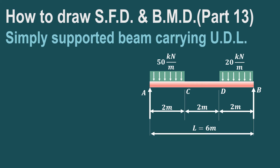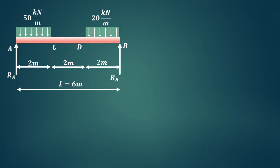In this video we will try to understand how to draw the shear force diagram and bending moment diagram in case of a simply supported beam carrying uniformly distributed load. The arrangement of the beam is as shown. A UDL of 50 kilonewton per meter is acting for a distance of 2 meters from the left hand support A, and a UDL of 20 kilonewton per meter is acting at a distance of 2 meters from the right hand support B.